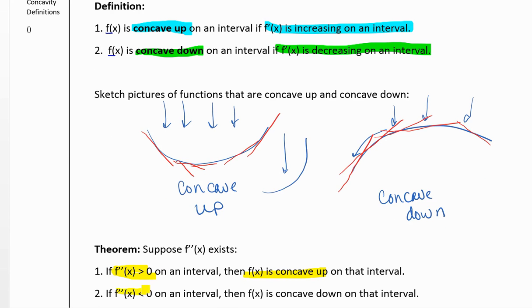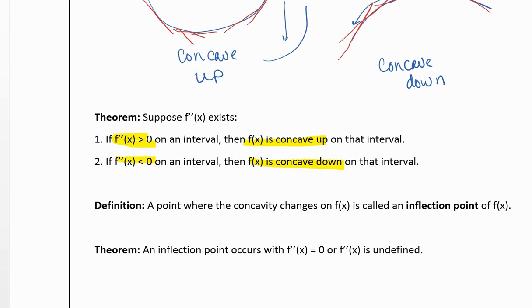And when the derivative is negative, then f(x) is concave down. We call the point where the concavity changes, where it either changes from concave up to concave down, an inflection point.